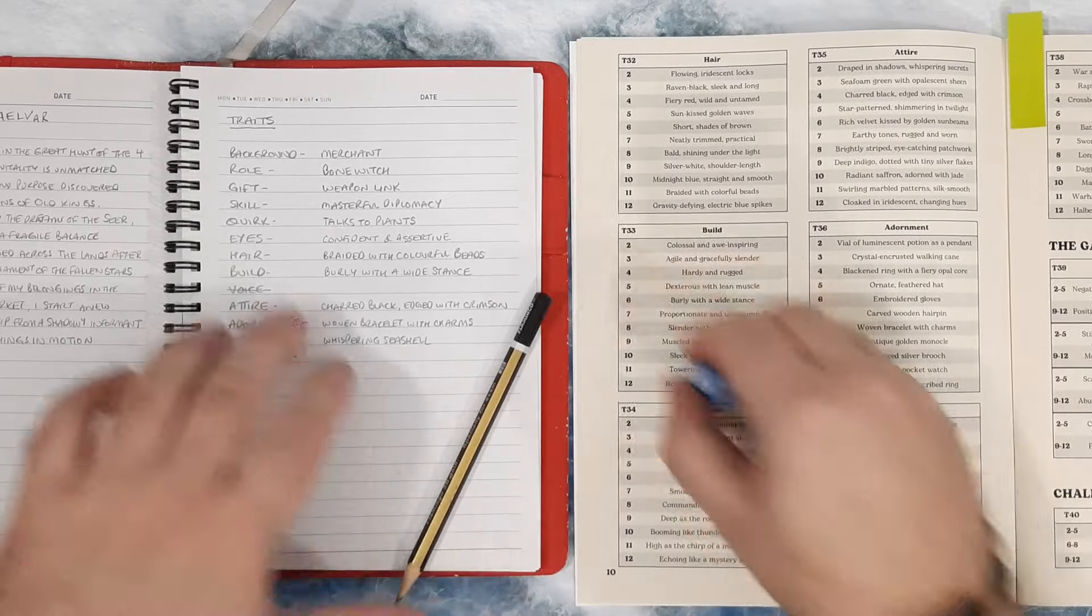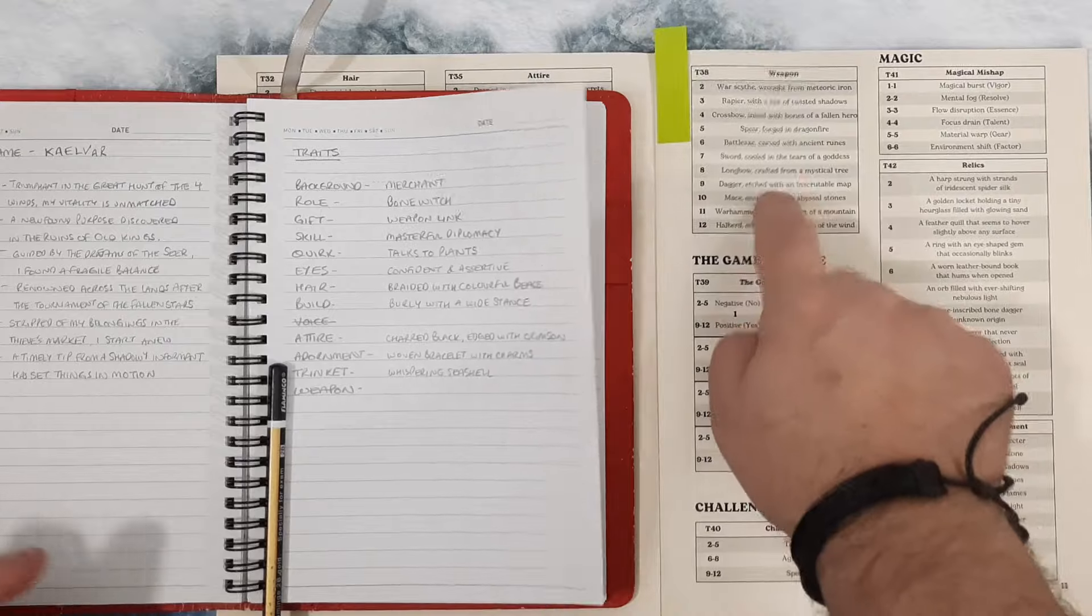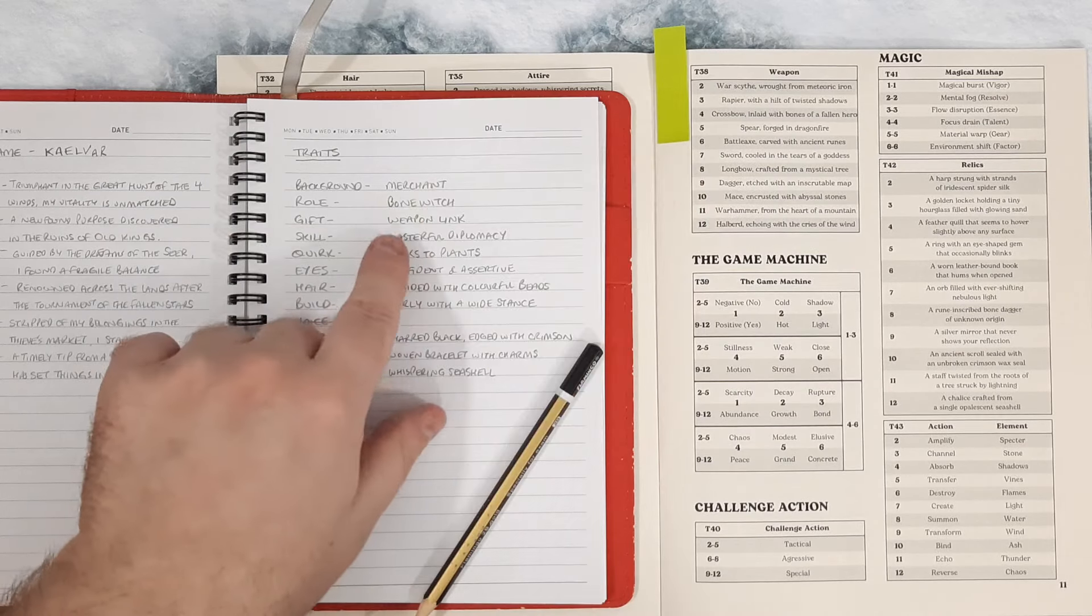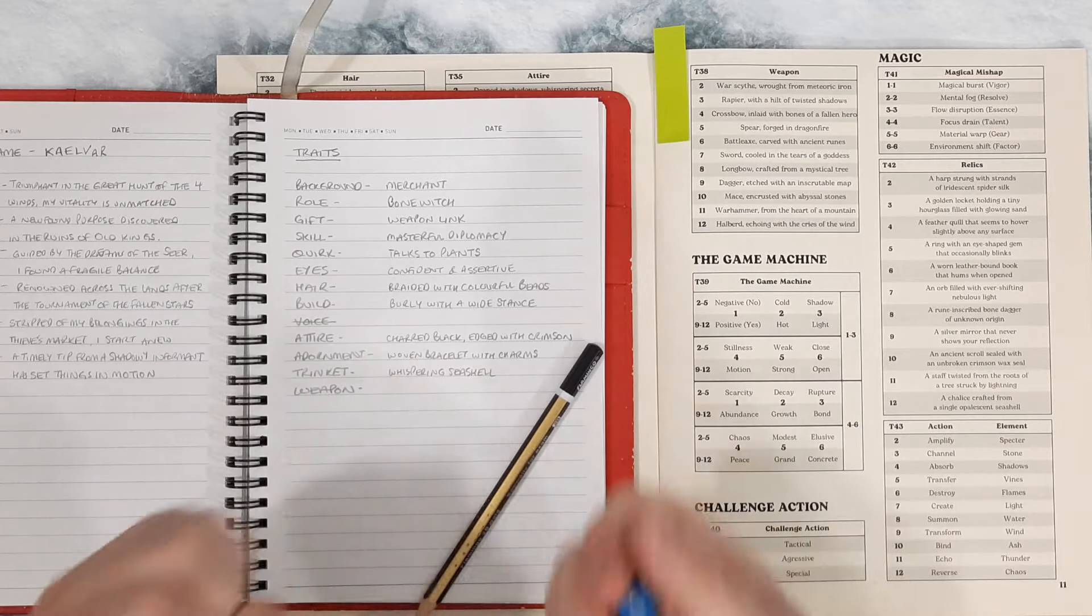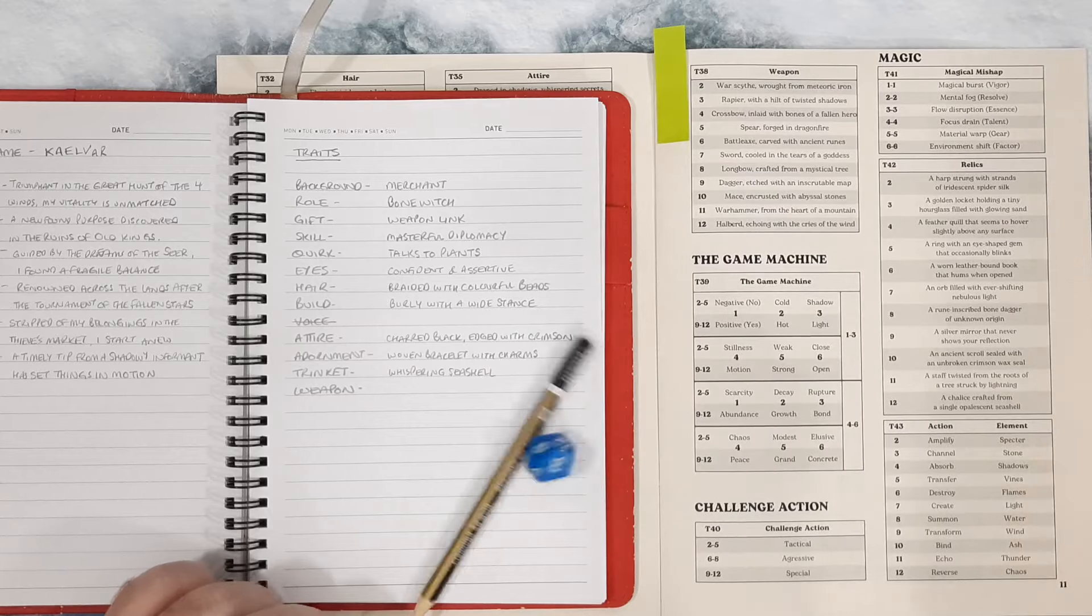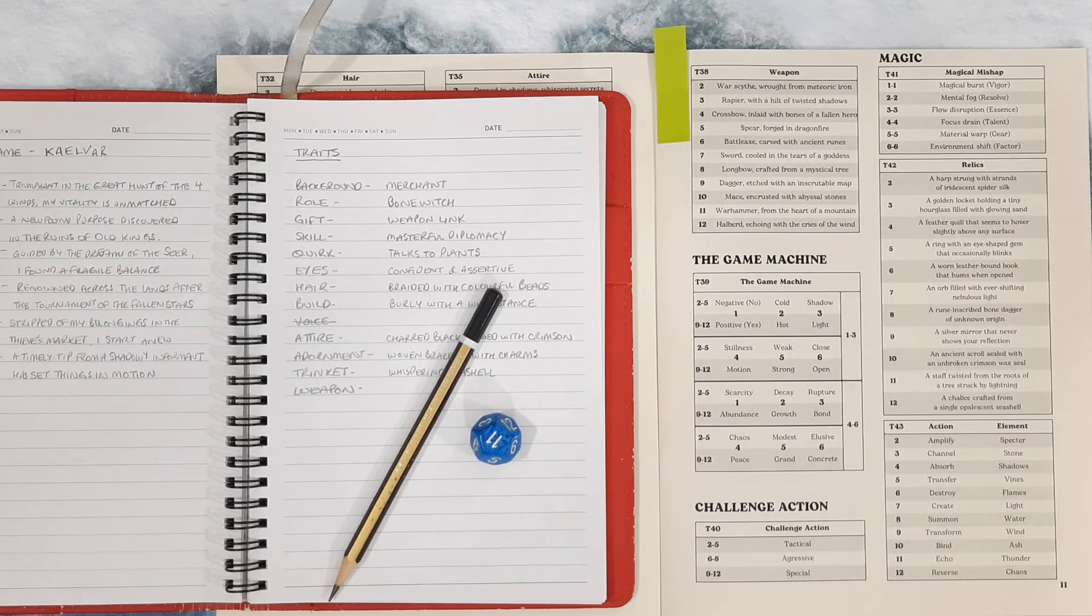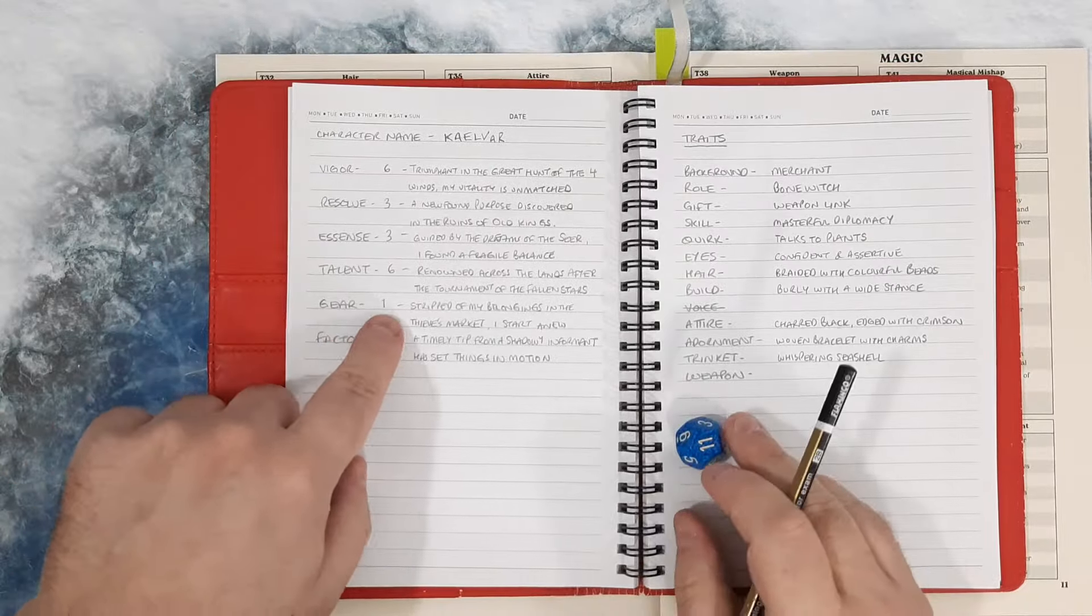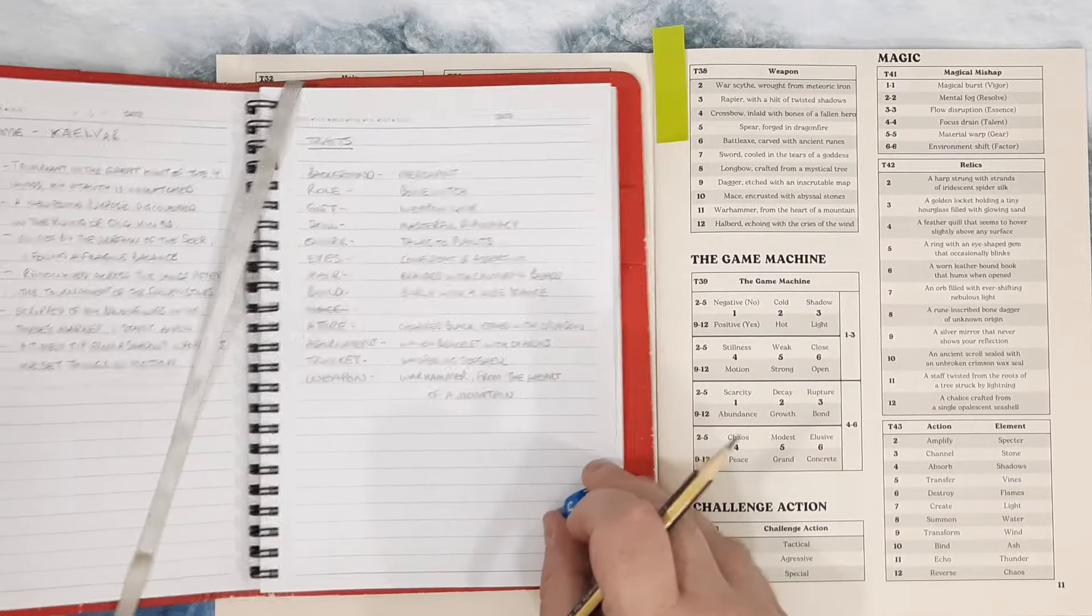Right, and the last thing we need to roll up is, let me move the book, make sure it's on camera. Last thing we're rolling up is the weapon. What weapon is my character going to be using? And again, I'm thinking that the weapon I roll is the one that they're going to have a weapon link with. They're like spiritually linked with this style of weapon, you know, in terms of being able to use it really well. It just seems natural. So I'm going to be rolling d12 again. Question 11, a war hammer from the heart of a mountain. Now, I'm thinking that this could potentially have been stolen by the thieves, but maybe I left it. Maybe I left it in my room at that point of time. So maybe this is the single piece of gear that I've got left because I forgot to bring it with me. I left it in my room and therefore I've still got it.